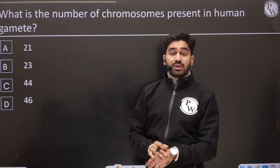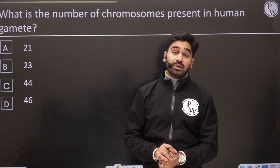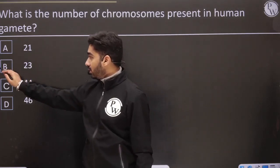What is the number of chromosomes in a human gamete? Direct question — 23.